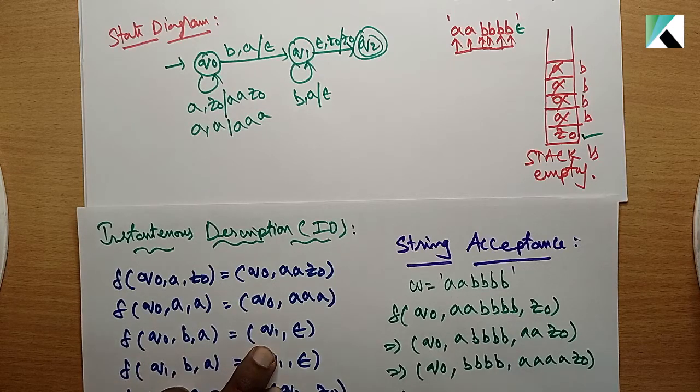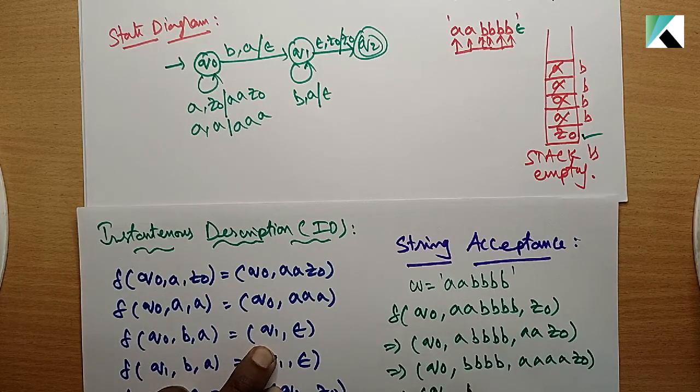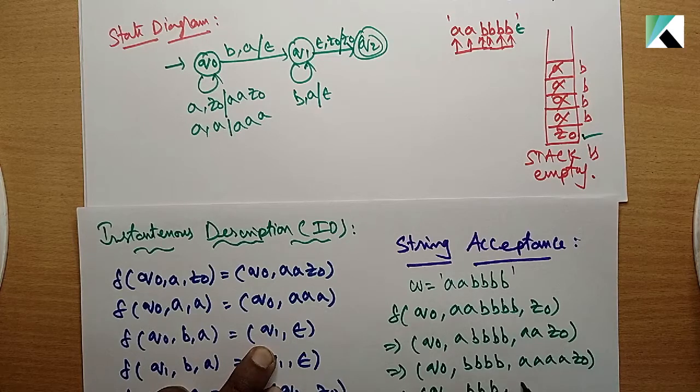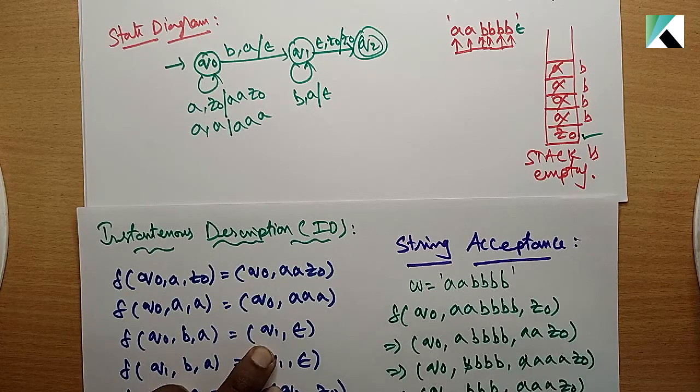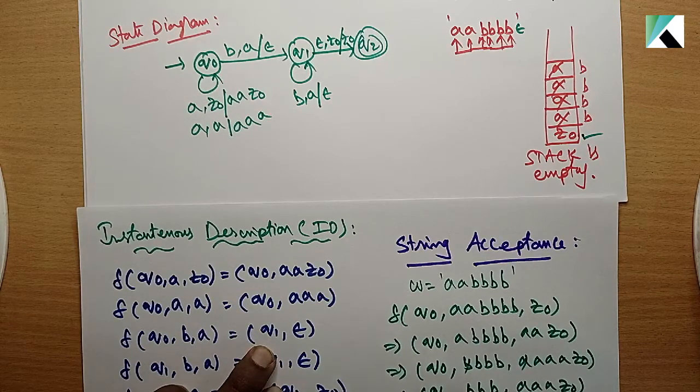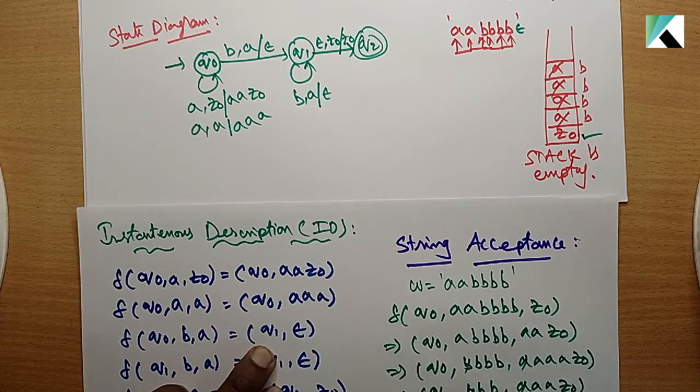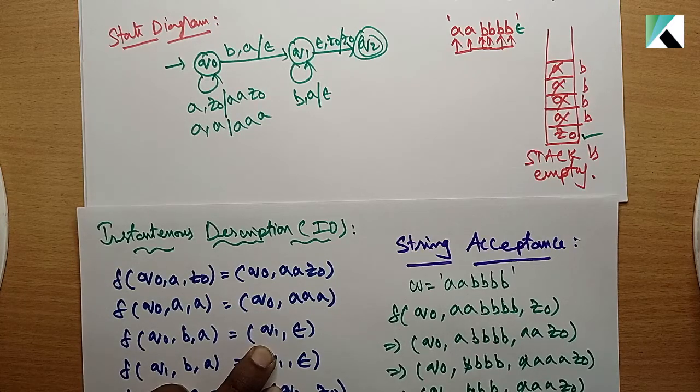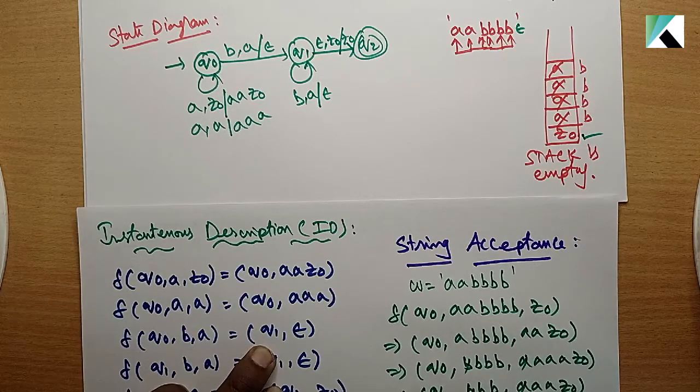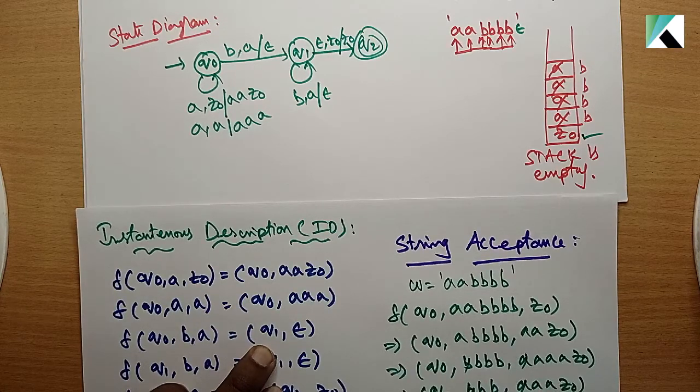q1 with triple b and triple a on the stack. Again in q1, these two are cancelled - bb and aa. Again q1, these two are cancelled - leaving just a and z0.